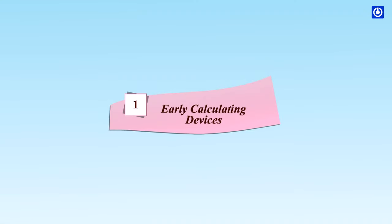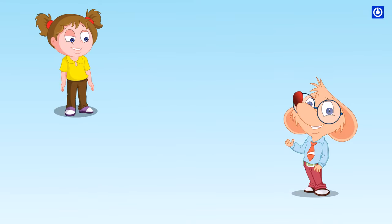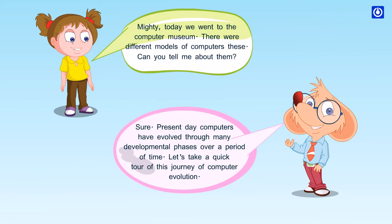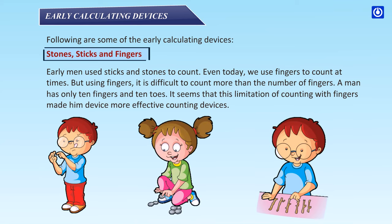Following are some of the Early Calculating Devices: Stones, Sticks and Fingers. Early men used sticks and stones to count. Even today we use fingers to count at times. But using fingers it is difficult to count more than the number of fingers. A man has only 10 fingers and 10 toes. It seems that this limitation of counting with fingers made him devise more effective counting devices.